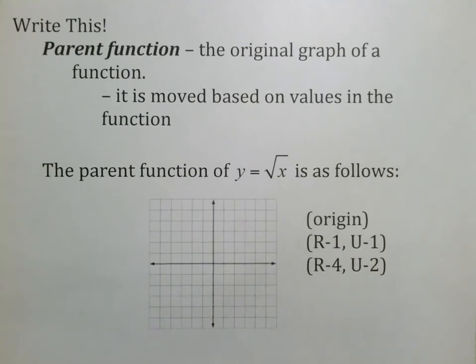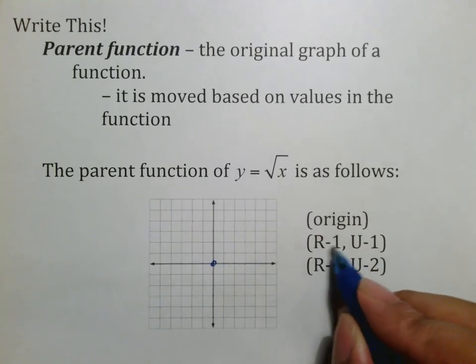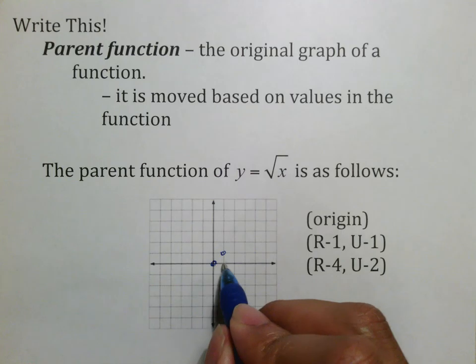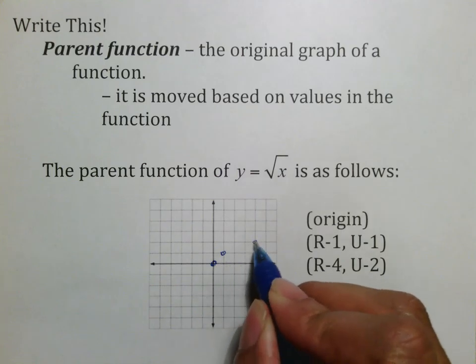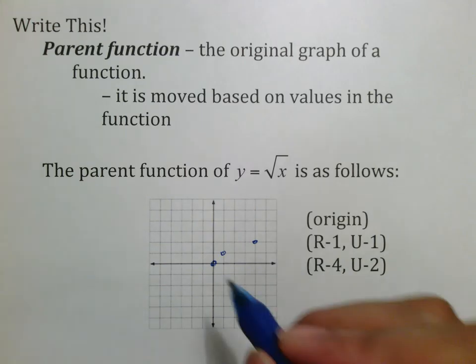The way you graph this thing is the parent function itself has three points you need. The first one's at the origin. The second one, from the origin, go right one, up one. And the third one, go right four—one, two, three, four—up two. Those three points are going to be the main three points you're going to use over and over for all of your graphs.